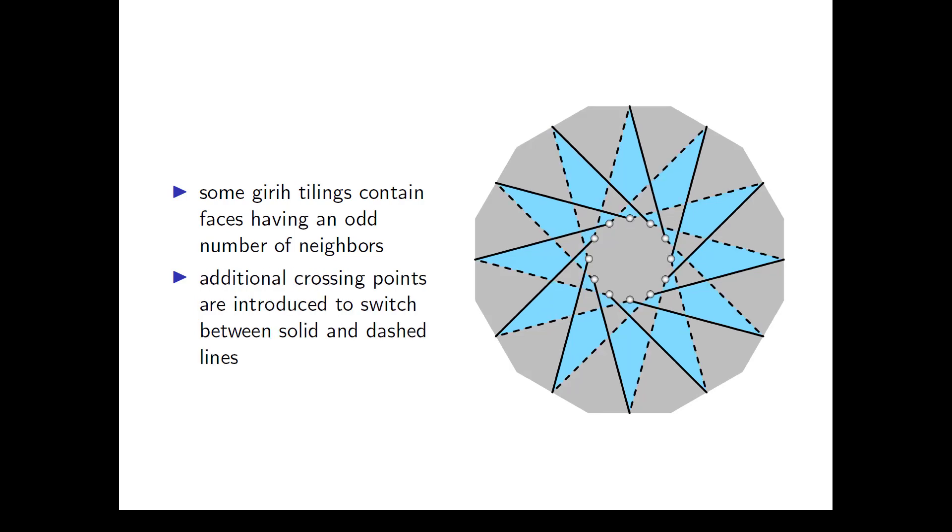We can fix these odd faces by inserting additional crossing points, where we can switch between solid and dashed lines, so we get alternating dashed and solid lines around these faces. At the newly inserted crossing points, the dashed and solid lines do not cross but both lines end, since the valence is only 2. This is the method we use in our patterns for the small kite-shaped faces with only 3 neighboring faces surrounding center faces of stars with more than 5 tips in the Geary patterns.